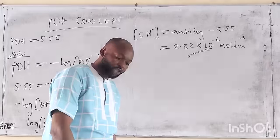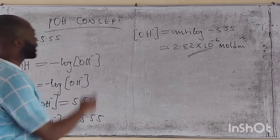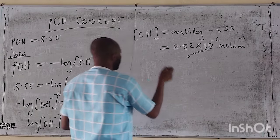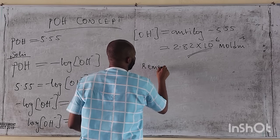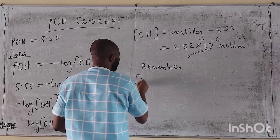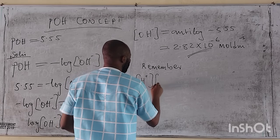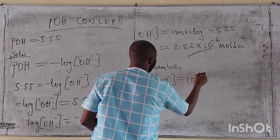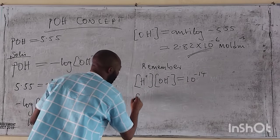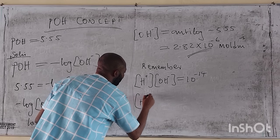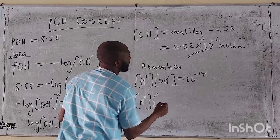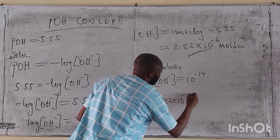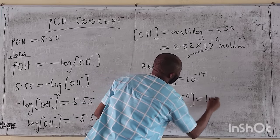Part B: what is the hydrogen ion concentration in the same solution? We've gotten the hydroxide ion concentration as 2.82 times 10 raised to minus 6. We recall that the product of H⁺ and OH⁻ equals 10 raised to minus 14.